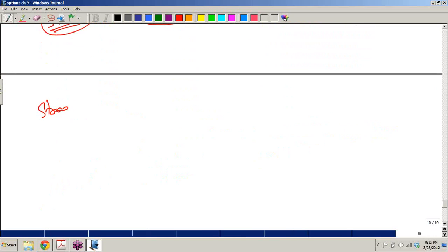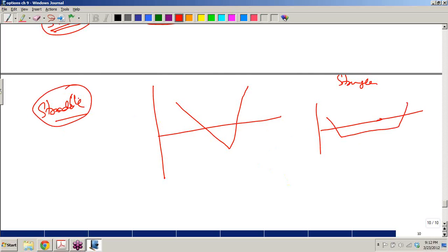If you see straddle, straddle looks like this. Your strangle looks like this. So if you see over here, when would you create a strategy which is straddle?